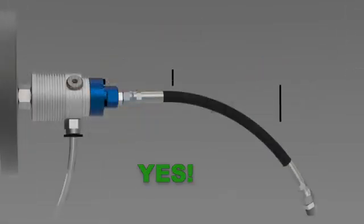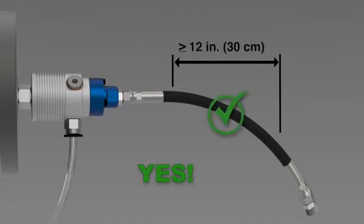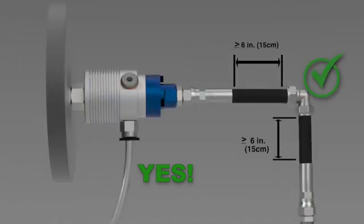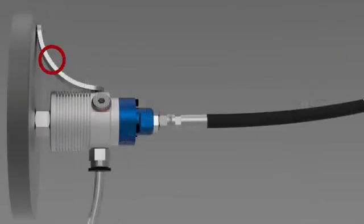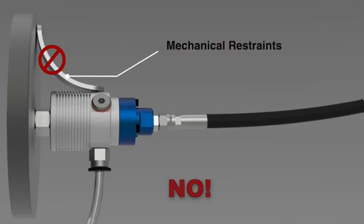Side loads are minimized when the supply hose has sufficient length and only slight bends. An elbow can relieve stress from tight bends in the supply hose. Mechanical restraints of any kind also create side loads on the union and are not recommended. Avoiding side loads from hoses or mechanical restraints will prolong the life of the union's bearings and seals.